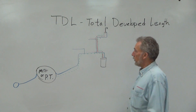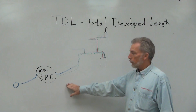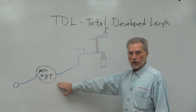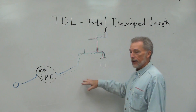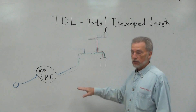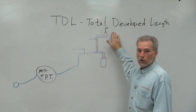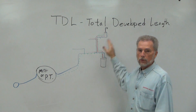Total developed length is a measurement from its source, whether it be a water meter or pressure tank, to its last destination. In this example, we have drawn a shower head on an upper level.